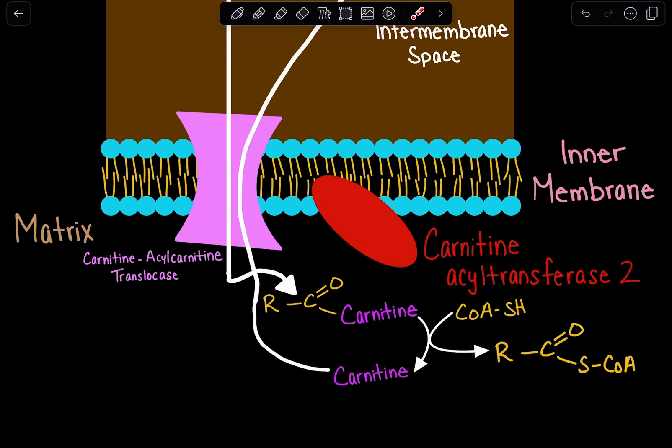This step is catalyzed by an enzyme as well that is found on the inner membrane, called carnitine acyl-transferase 2. This enzyme, as a result, will give us our product of acyl-CoA.